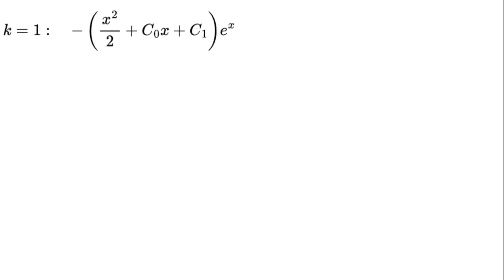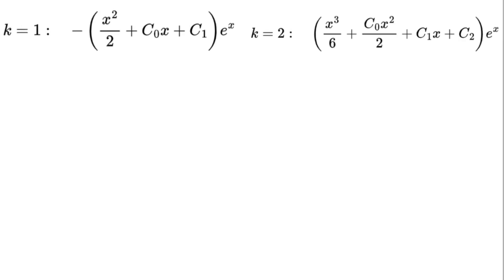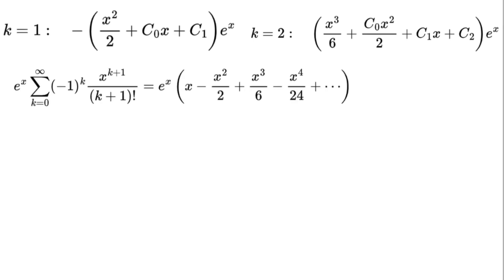For k equals 1: negative (x squared over 2 plus c₀ times x plus c₁) times e to the power of x. For k equals 2: (x cubed over 6 plus c₀ times x squared over 2 plus c₁ times x plus c₂) times e to the power of x. Now let's sum the series, splitting the main terms and the constants.